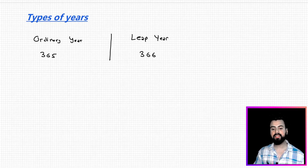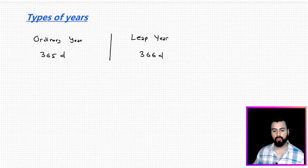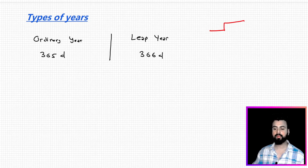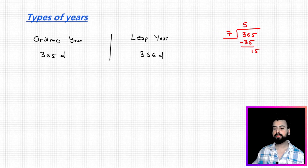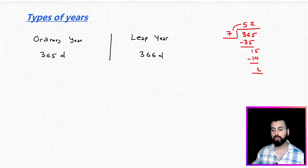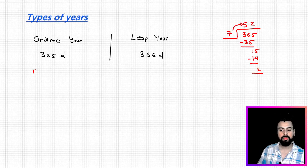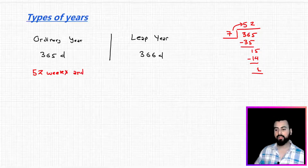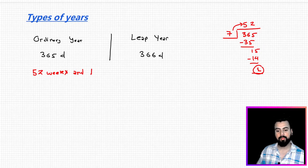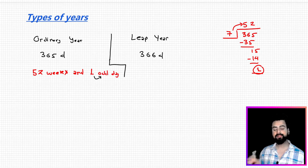Now if I try representing these number of days in the form of weeks, in order to convert number of days into weeks, we divide by seven. You'll get a remainder of one, so 365 can be written as 52 weeks and one odd day. This remainder is nothing but an odd day — one extra day. It has nothing to do with odd or even numbers.